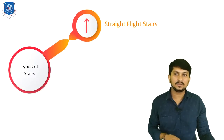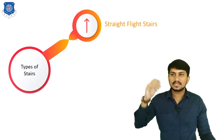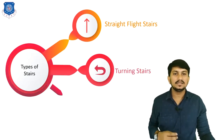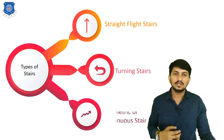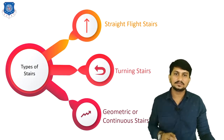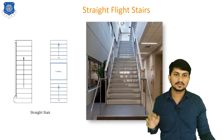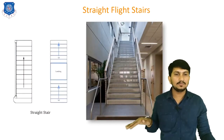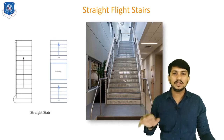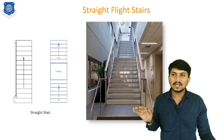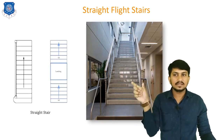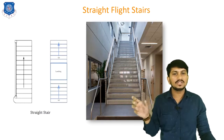Stairs are basically divided into three types: first is straight flight stairs, second is turning stairs, and third is geometric or continuous type of stairs. In straight flight stairs, the flight starts from the bottom floor to the top floor with no turning in between. It is called straight flight stairs. In between the flight, a landing portion is provided where the user can rest.